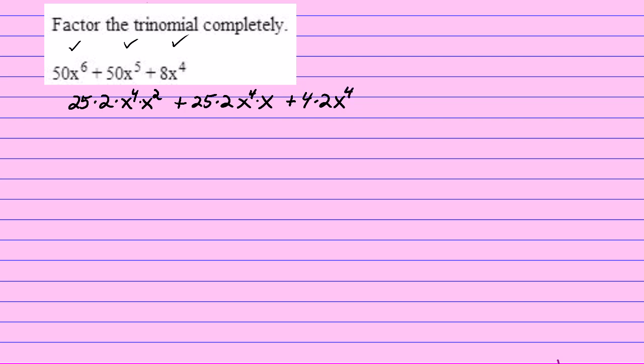Now it should be abundantly clear that each of these terms contains 2x to the fourth. There, there, and there. So I will pull out 2x to the fourth as a common factor, and I'll be left with 25x squared plus 25x plus 4.